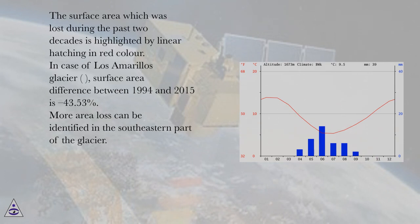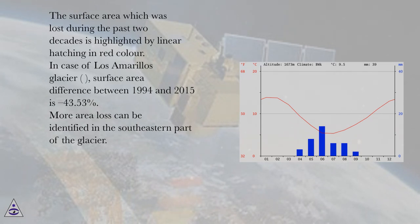In the case of Los Amarillos Glacier, the surface area difference between 1994 and 2015 is minus 43.53%. More area loss can be identified in the southeastern part of the glacier.